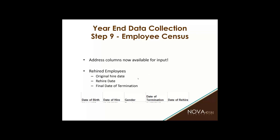When you download that Excel file and scroll all the way to the right, there are now columns to provide the addresses, emails, and phone numbers of your employees. We want that information simply to have another piece of data to verify if we get a distribution or loan request from any of your employees. If something on their request form does not match what we have on file from what you provided, that will be a red flag and we will contact you to verify whether the participant's address changed, because we want to prevent fraud. It is not a requirement to provide that information — it's just another security item.